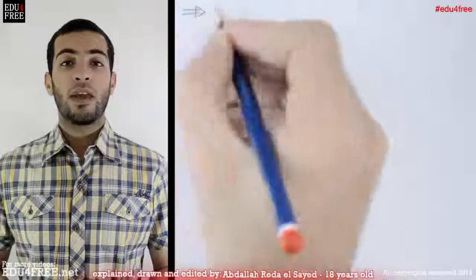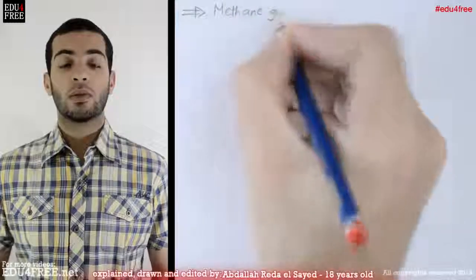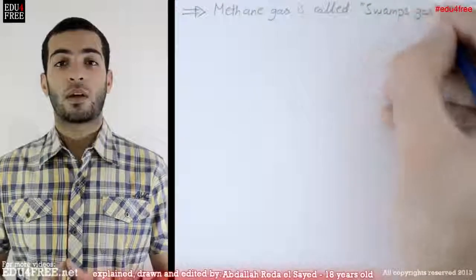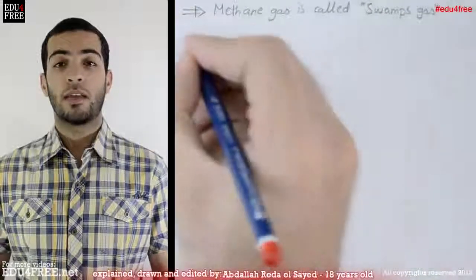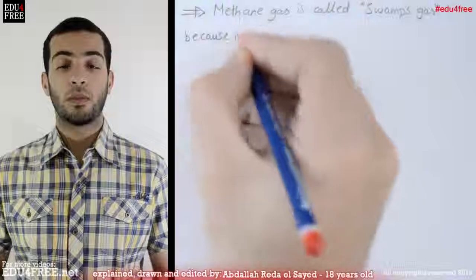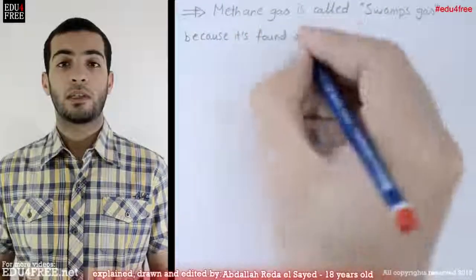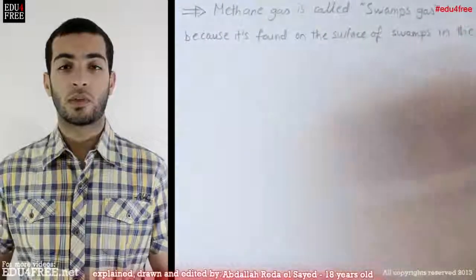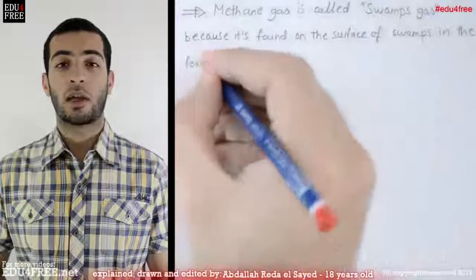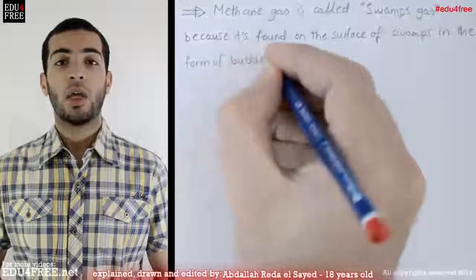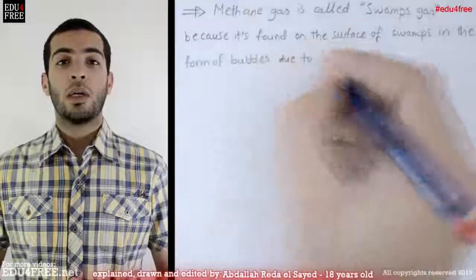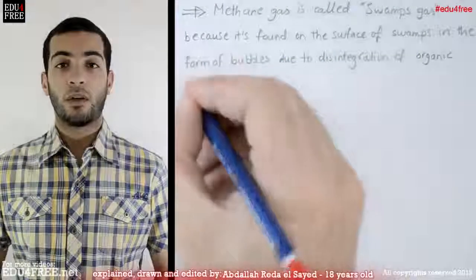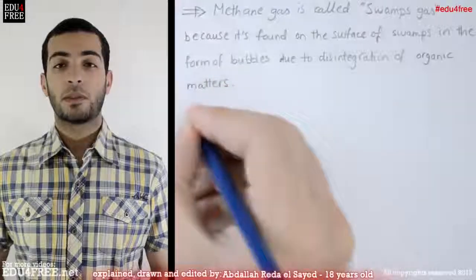Methane is also called swamp gas because it's found on the surface of swamps in the form of bubbles, due to the disintegration of organic compounds. And of course, because methane is an organic compound, it will be found in these swamps.